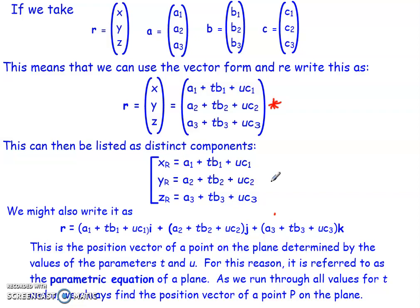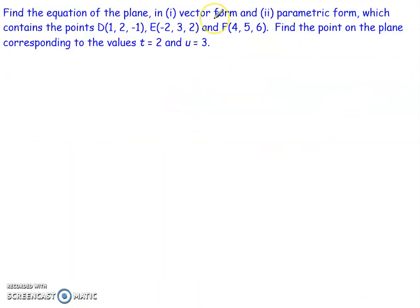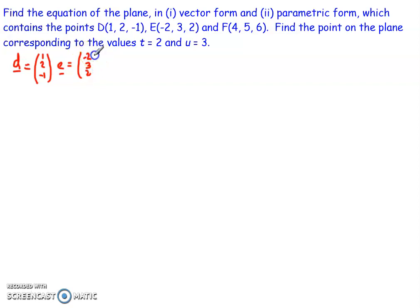Let's work through an example. We want to find the equation of a plane, first in vector form then in parametric form, containing the points D, E, and F. Then we'll find the point on the plane corresponding to T equals 2 and U equals 3. The position vectors are: D = (1, 2, −1), E = (−2, 3, 2), and F = (4, 5, 6).